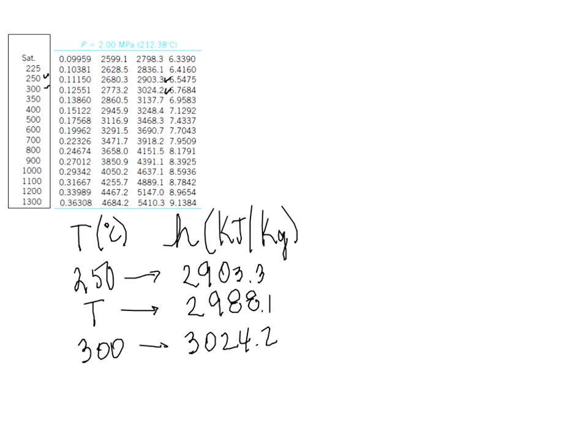For the interpolation, what I'm going to look for is the differences between temperature and enthalpy. So I'm going to look at this difference and this difference here. This delta, I'm going to call it Y. The difference between 300 and 250 is 50. The difference between 2988 and 2903 is 84.8. And the difference between 3024 and 2903 is 120.9.